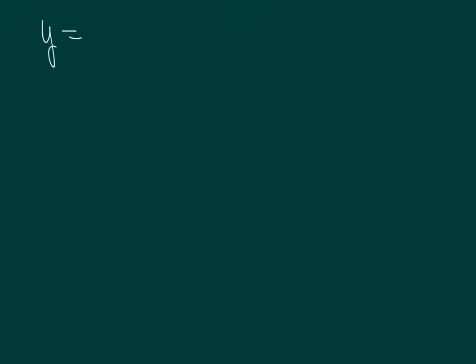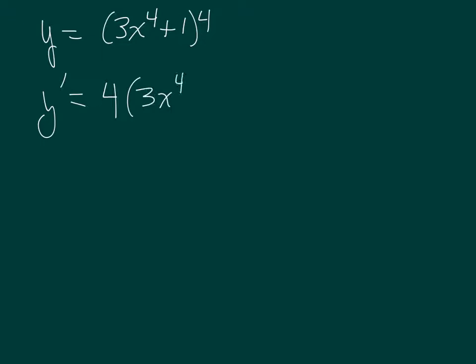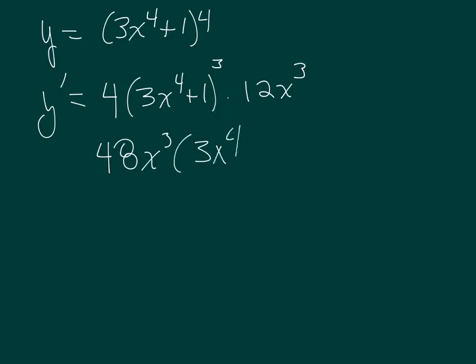So here we go. I have y equals 3x to the fourth plus 1, all to the fourth. The outside — I can bring my exponent down, the 4, leave the inside alone, and then subtract 1, times the derivative of the inside. Then I can multiply these together: 3x to the fourth plus 1, to the third, and I'm done.